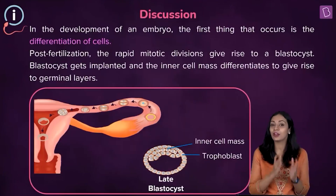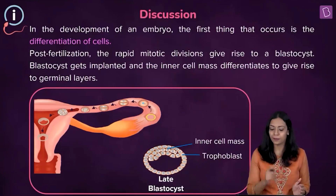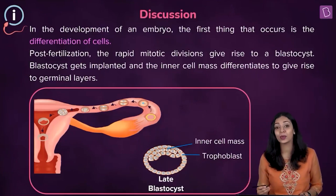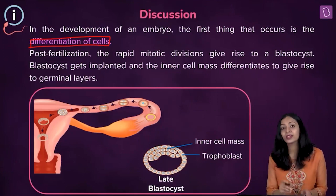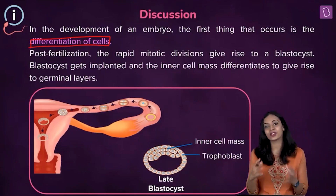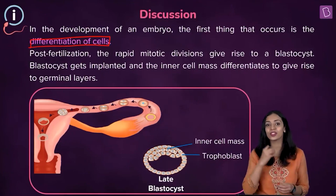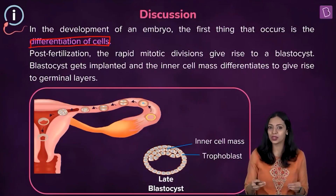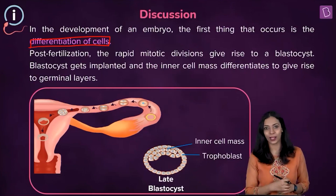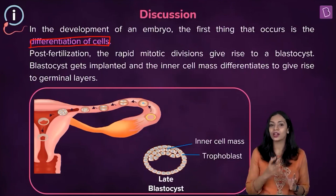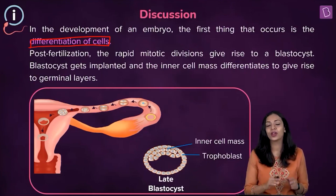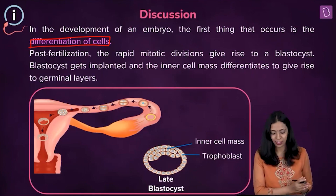During the development of an embryo, the first thing that takes place is the differentiation of cells. Fertilization is the process by which the male gamete, the sperm, fuses with the female gamete, the egg, to form a diploid zygote. This zygote undergoes several cleavage divisions to form a ball of cells known as the morula.